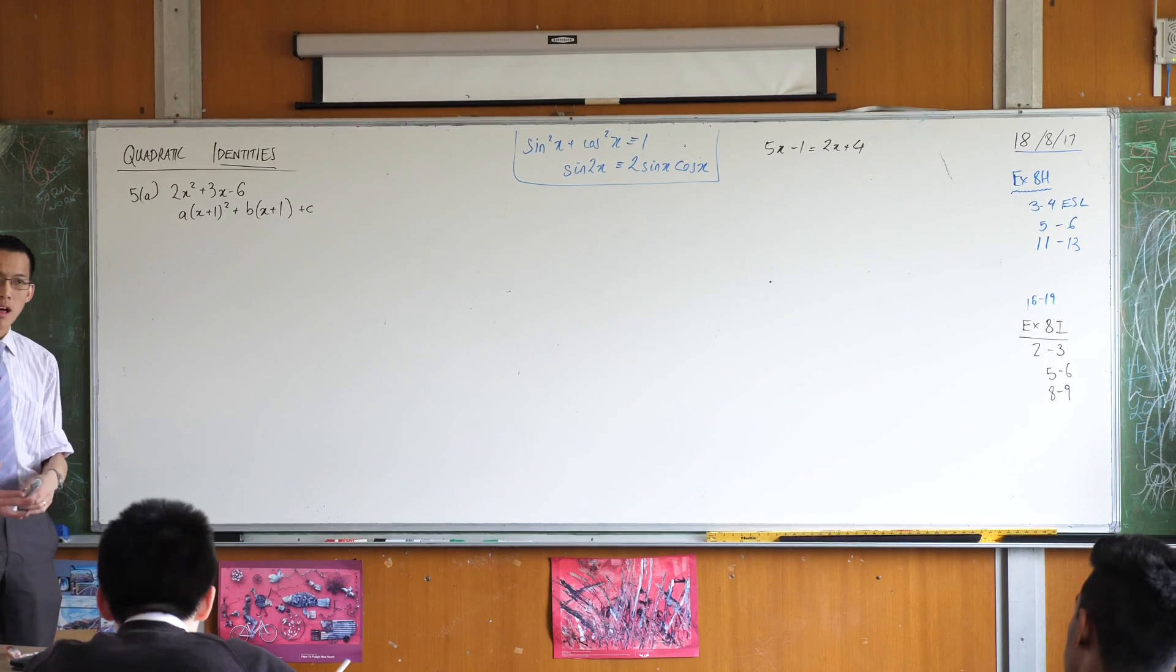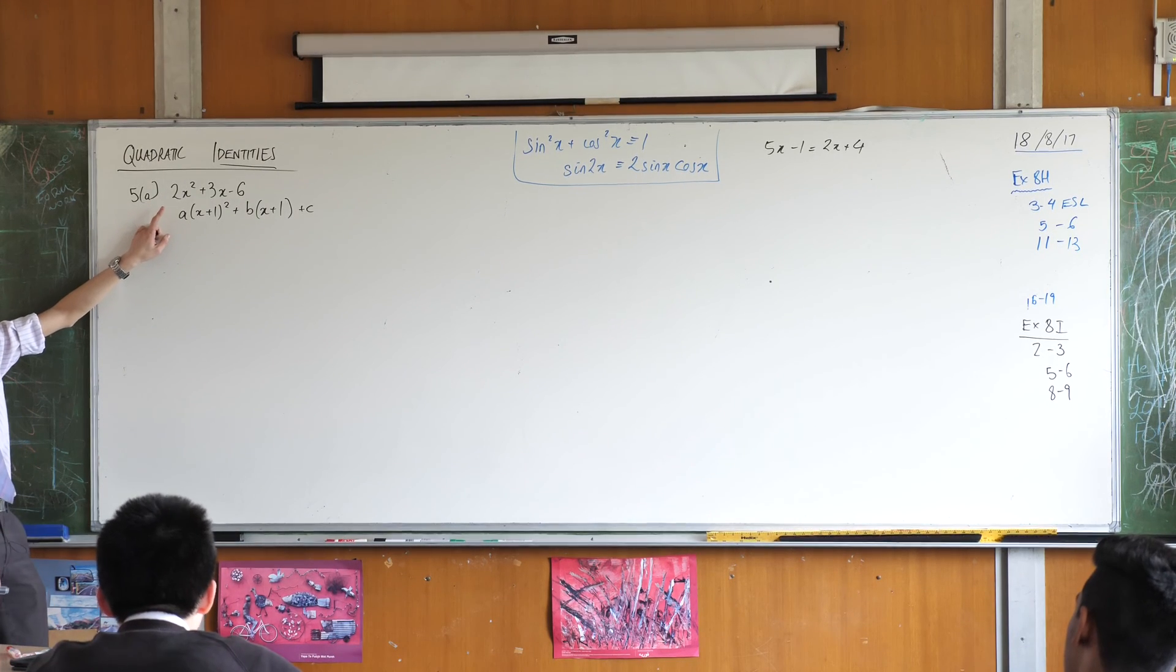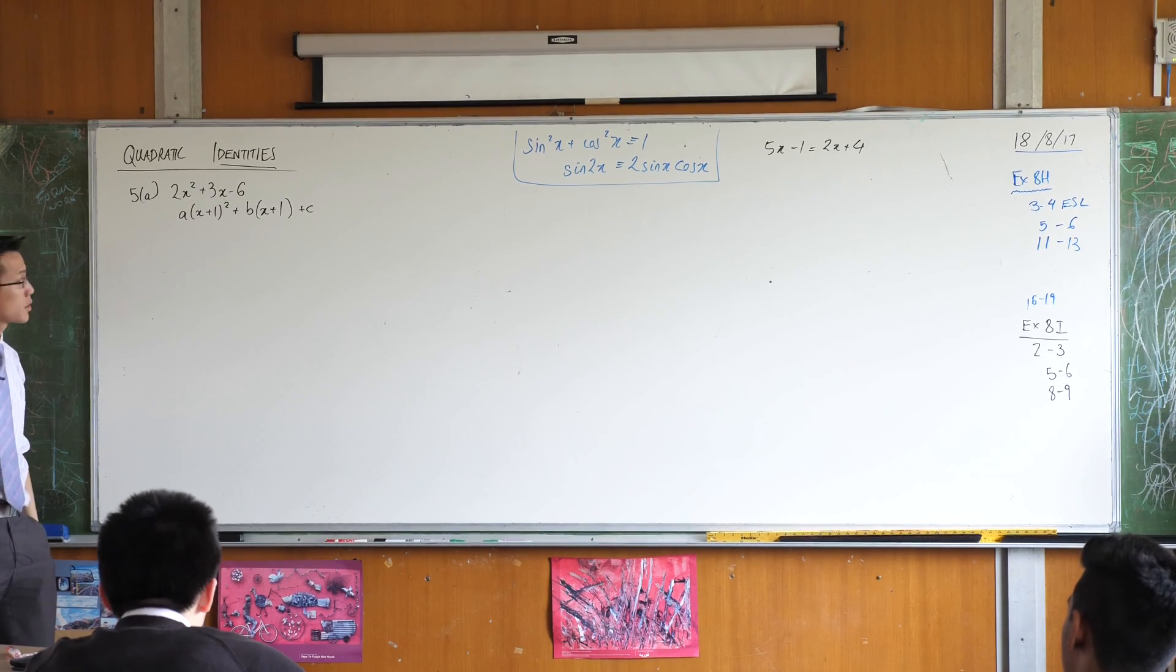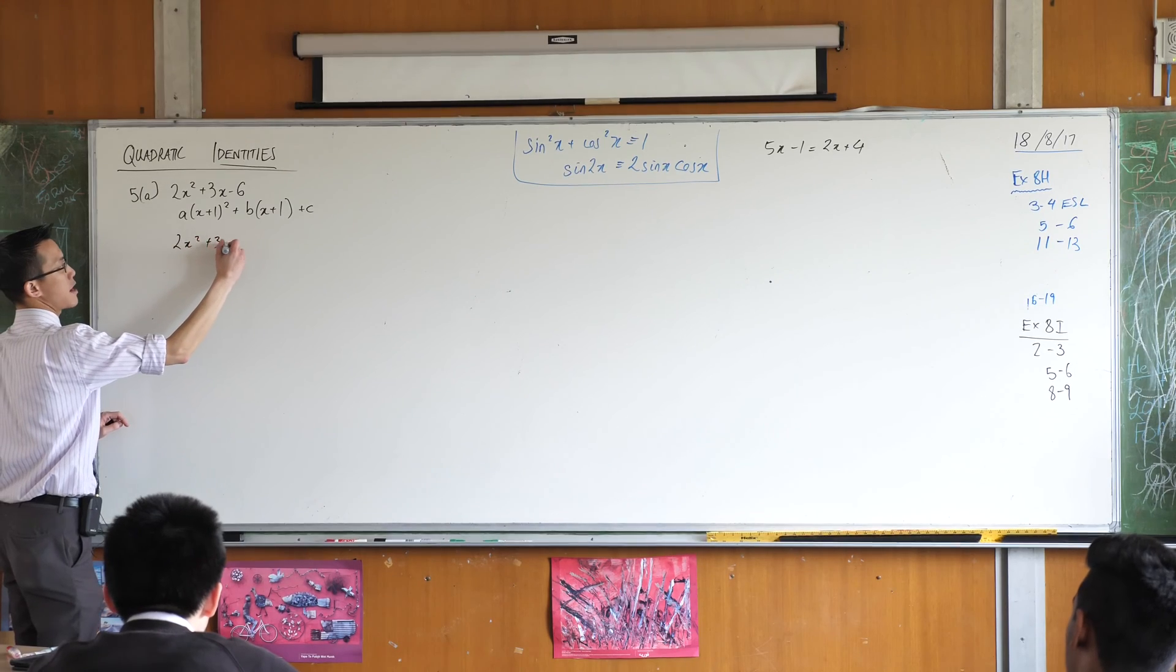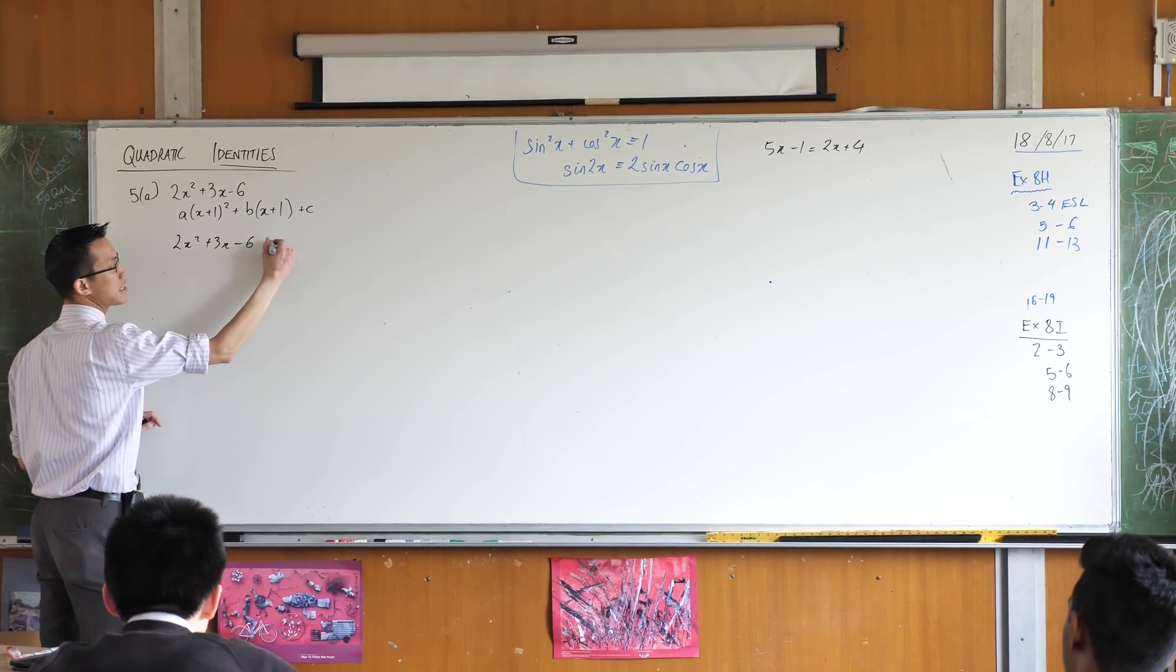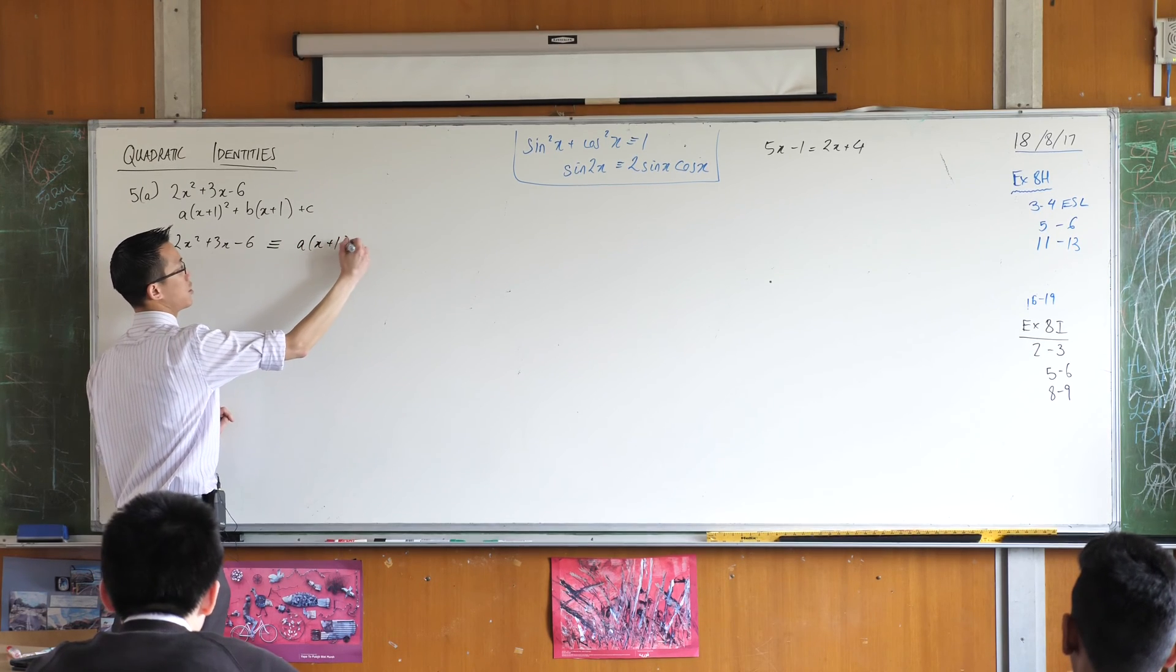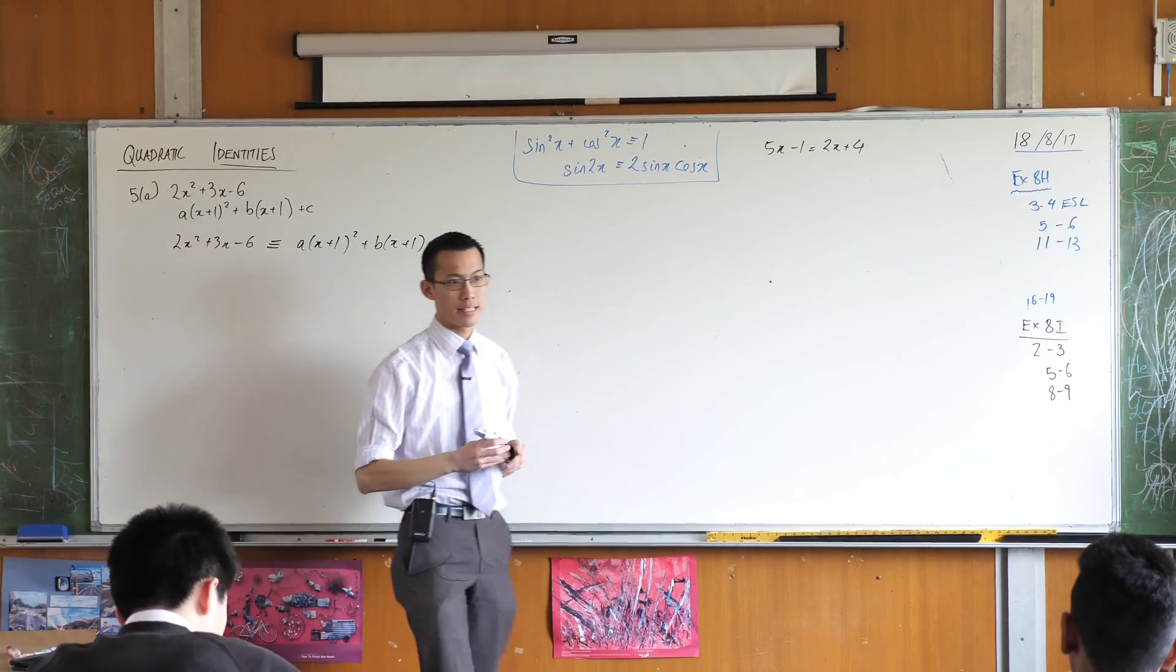So what they are implying is that I can say that this is identical to this, supposing I know what a, b and c are equal to. So I can say 2x squared plus 3x take away 6 is exactly identical to this second expression for every single value of x that exists.